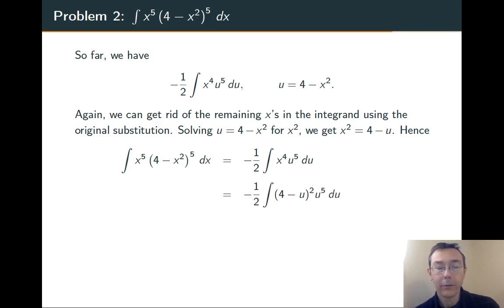Now I'm going to substitute out that x to the 4th and replace it with 4 minus u. That's x squared squared. Overall, I'm getting negative 1 half, 4 minus u, quantity squared, times u to the 5th.